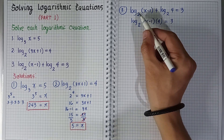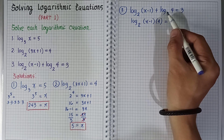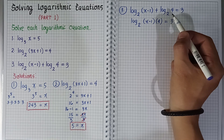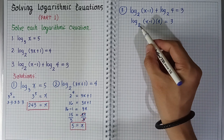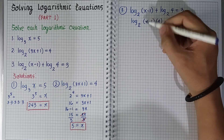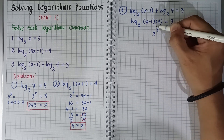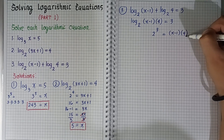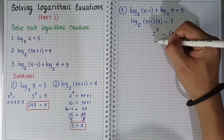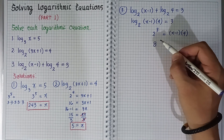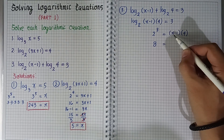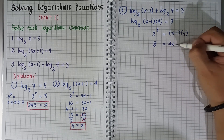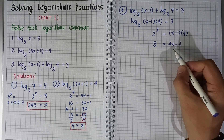Express as a single logarithm first using logarithm properties, then: 2 raised to the 3rd power equals (x minus 1) times 4. Simplifying, 2 cubed equals 8. Then distributing: 4 times x is 4x, and 4 times negative 1 is negative 4. So we have 8 equals 4x minus 4.